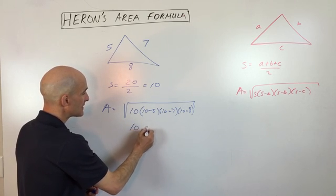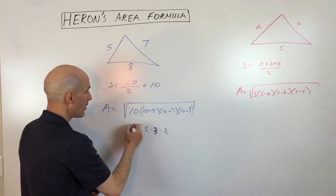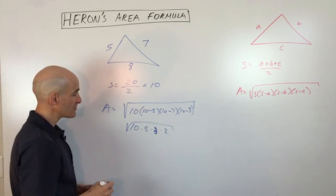If we simplify that down, we get 10 times five times two, oops, I'm sorry, times three times two, right? And then we take the square root of that, which comes out to what?